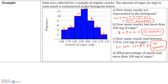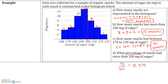Once again, let's not forget the units. Lastly, what percentage of snacks had more than 200 milligrams of sugar? We have 15 snacks with more than 200 milligrams of sugar. When you take a percentage, it's the number of snacks over 200 milligrams divided by the total number of snacks, which is 47. 15 divided by 47 gives 0.319. We multiply by 100% to get 31.9%.